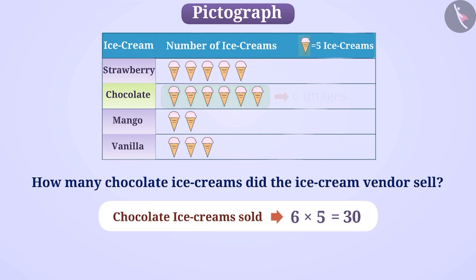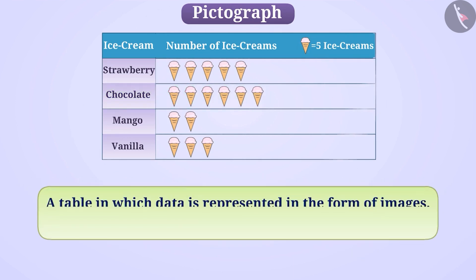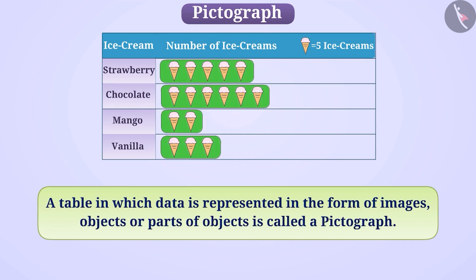This table helps us understand the data just by looking at it. Numbers are not represented in this table, but still, just by looking at the table, we can easily find the answer to number-related questions. A table in which data is represented in the form of images, objects, or parts of objects is called a pictograph.